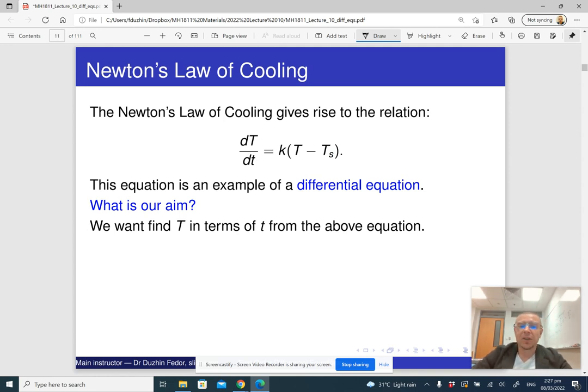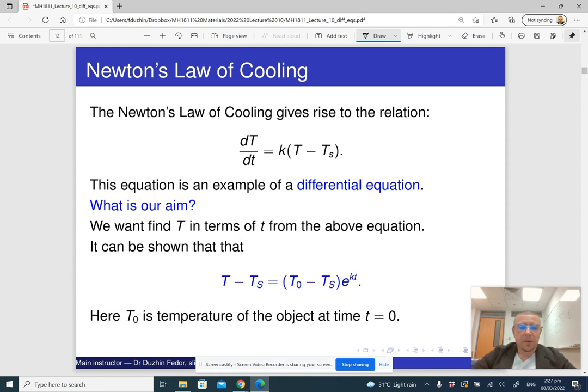So we will want to find, to express our unknown function in terms of the independent variable. And in particular here, it happens that the solution is this. Well, to note that, as I already said, K here is actually a negative number.